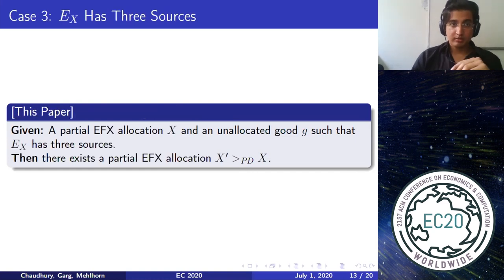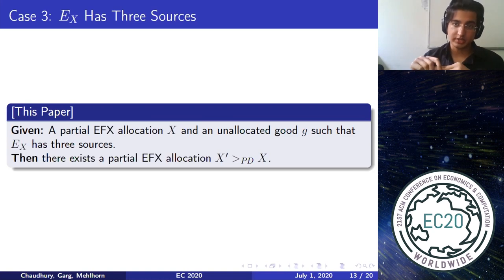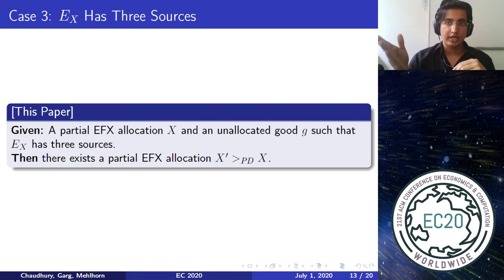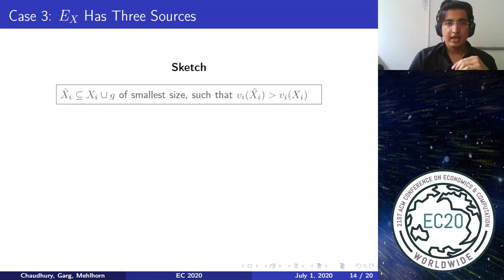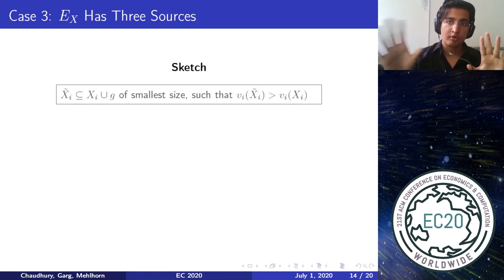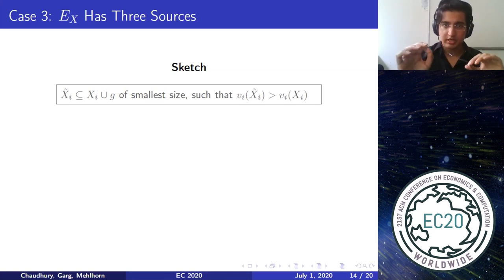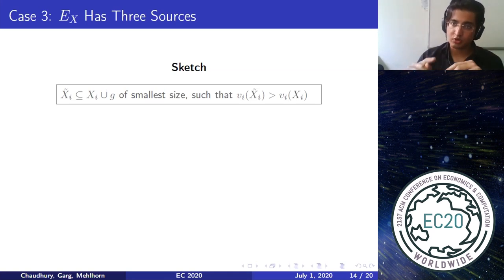Now we come to more complicated cases. What if the envy graph has two or three sources? In this paper, we show that when the envy graph has three sources, an update rule is still possible: given an unallocated good, we can move from one partial EFX allocation to another that Pareto dominates it. Unfortunately, the update rule is much more complicated and requires breaking more than a single bundle.